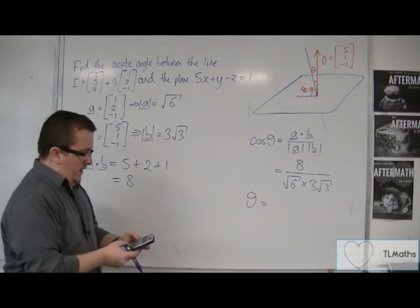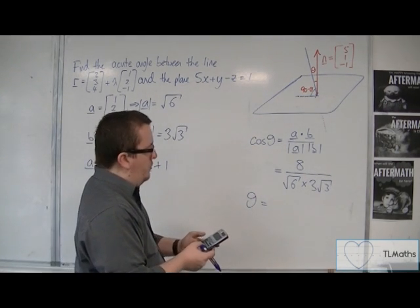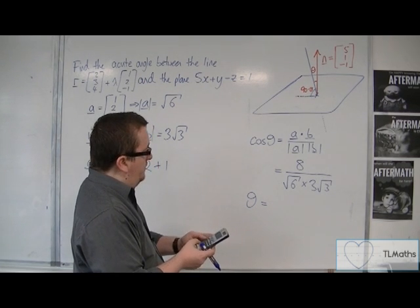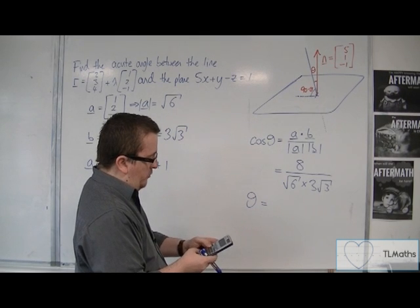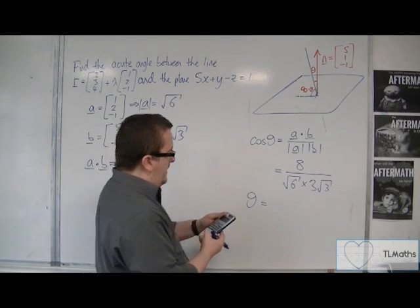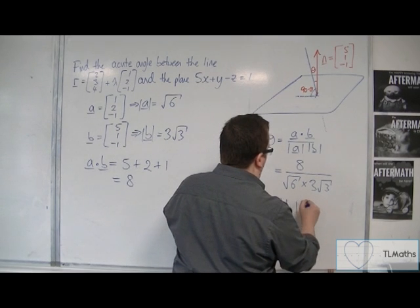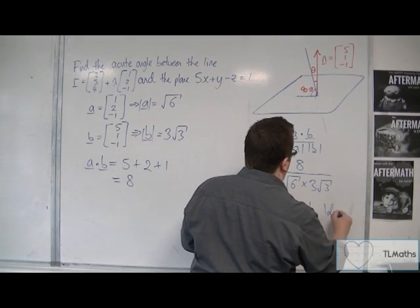So inverse cosine, making sure your calculator is in degrees, of 8 over root 6 times 3 times root 3. Gets me 51.1 degrees to 1 decimal place.